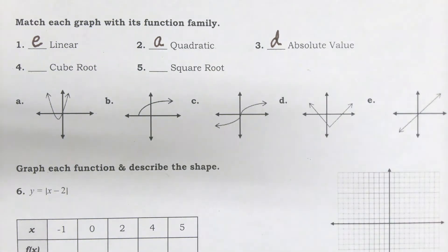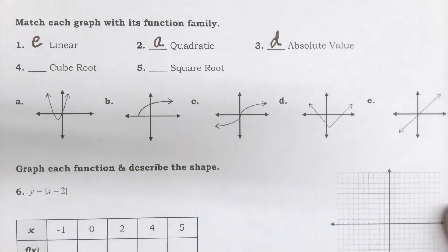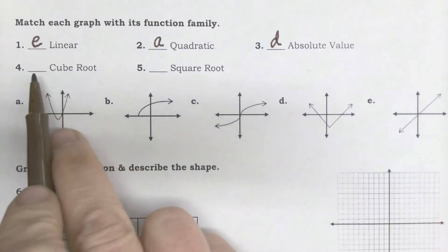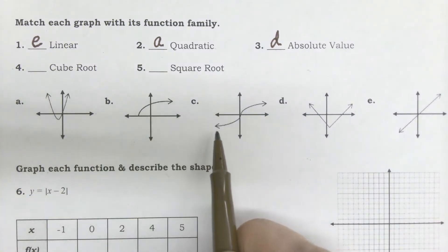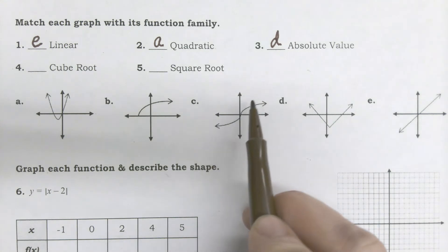The last two are the most difficult, I think, to remember. We have a cube root and a square root. Four is B. Four is C.